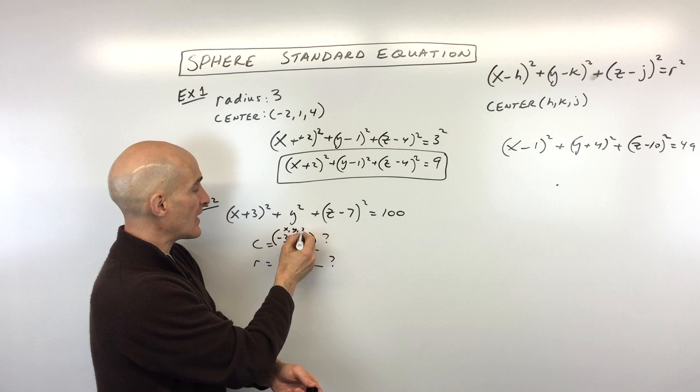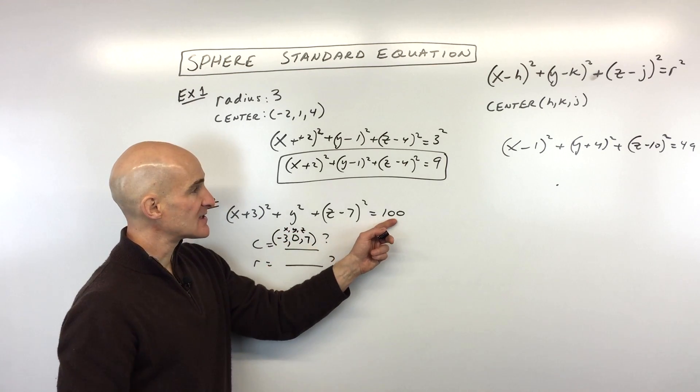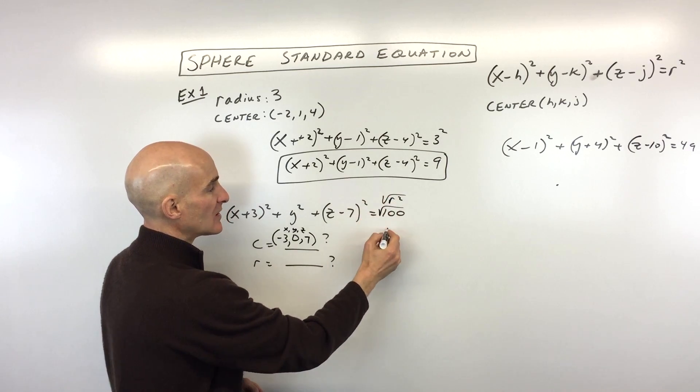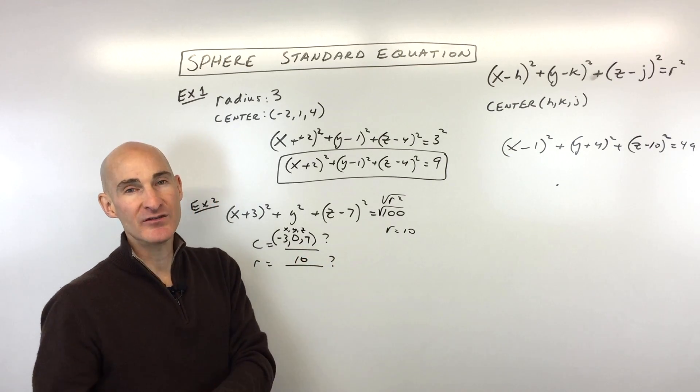So that's our x, y, and z-coordinate of the center of our sphere. And then the radius, okay, this is r squared, remember. So we have to take the square root, to solve for r. And you can say, in this case, it's going to be a radius of 10. And you've got it.